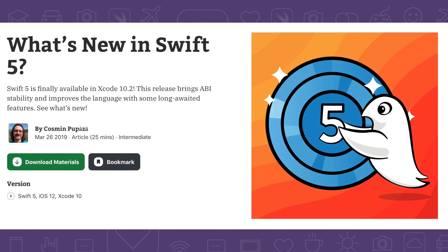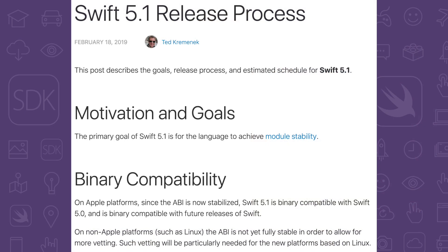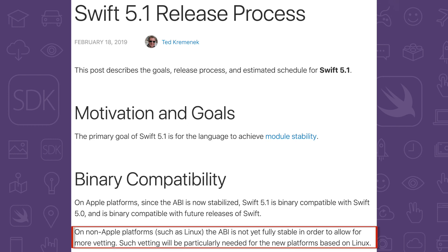Believe it or not, there is already work in progress for Swift 5.1. According to the Swift.org blog, the primary goal of Swift 5.1 is module stability. Unfortunately, not everything is good times — while Swift 5 is ABI stable on Apple platforms, according to Swift.org, the language is not ABI stable on other platforms like Linux.